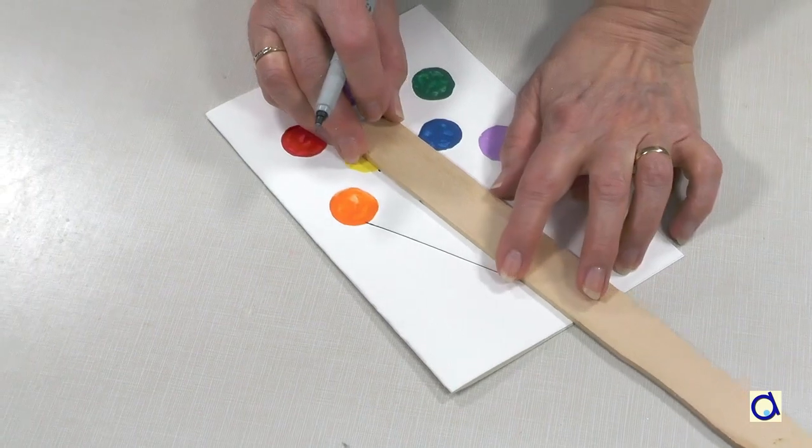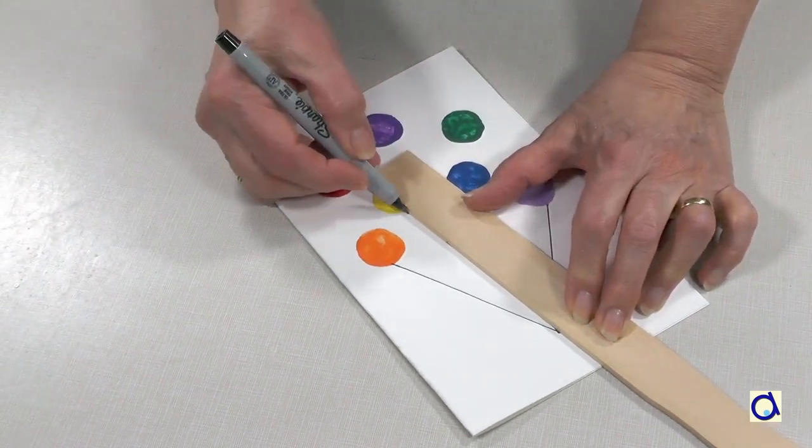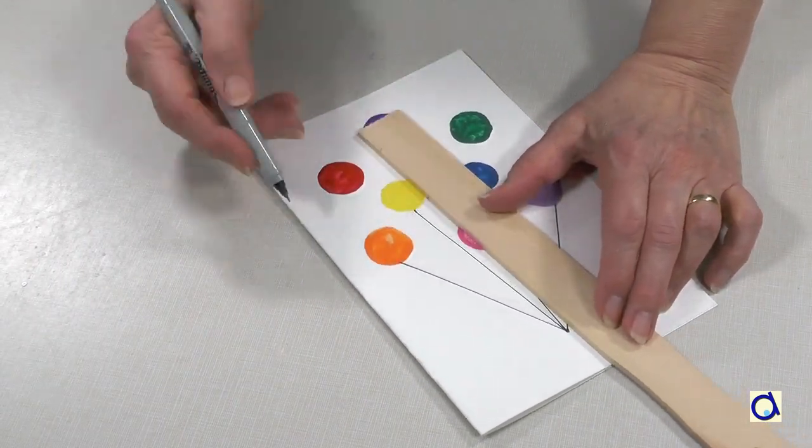When the paint is dry, trace the strings that hold the balloons together with a black marker. To keep the strings straight, use a ruler for example.